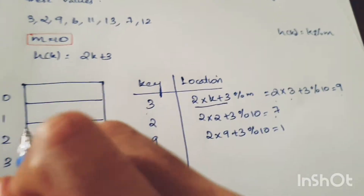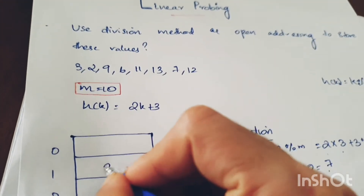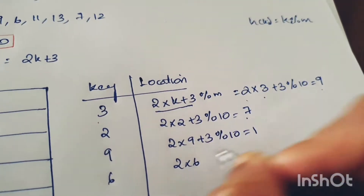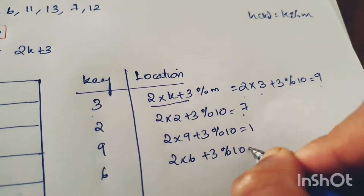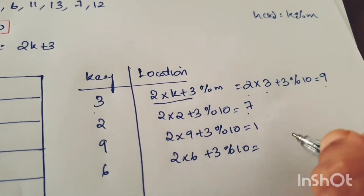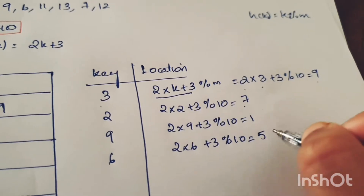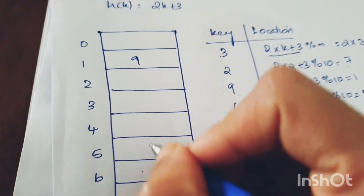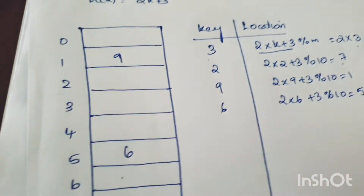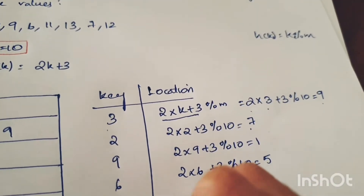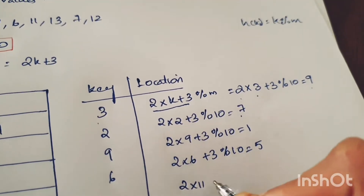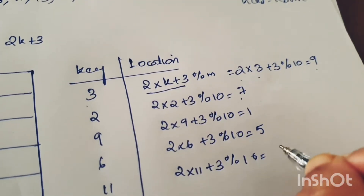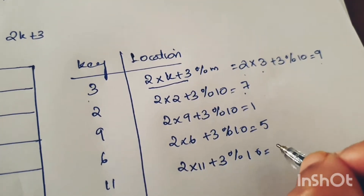Key 9 goes to the 1st index. For key 6: 2(6) + 3 = 12 + 3 = 15, mod 10 = 5. Store at the 5th position. For key 11: 2(11) + 3 = 22 + 3 = 25, mod 10 = 5. This also maps to index 5.